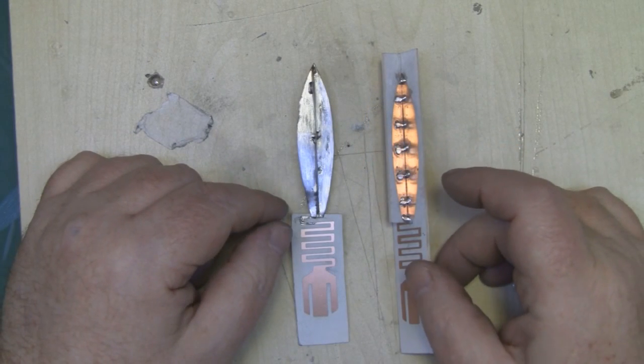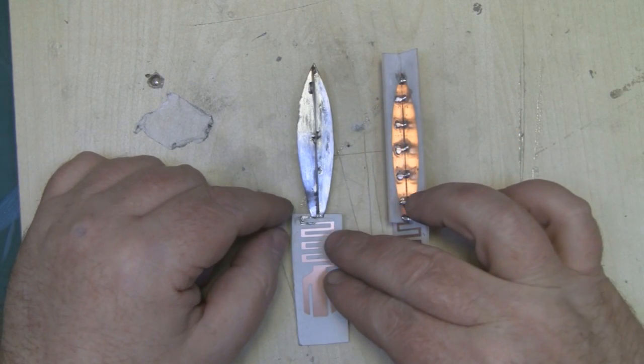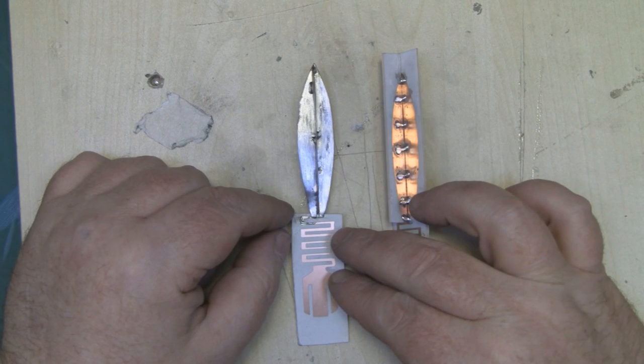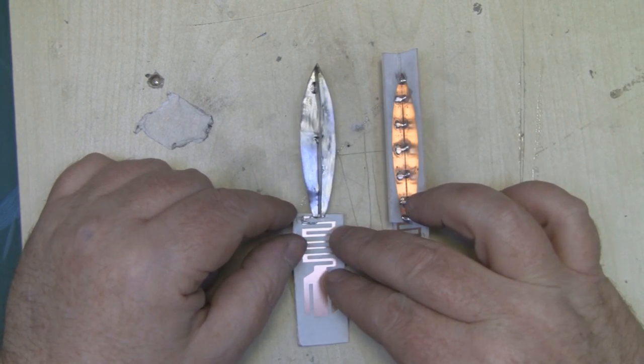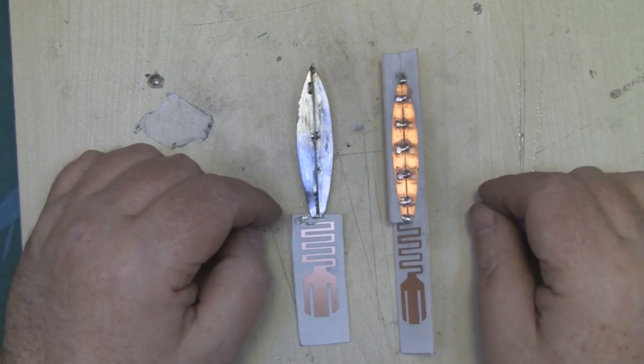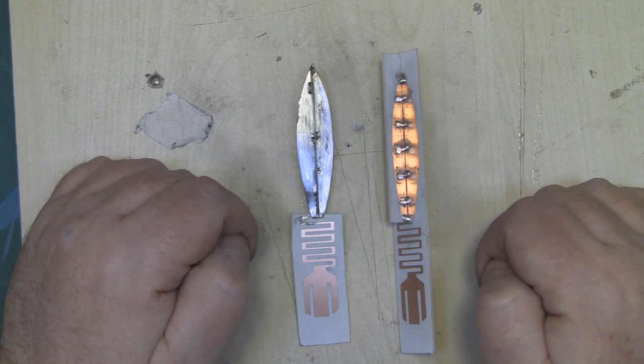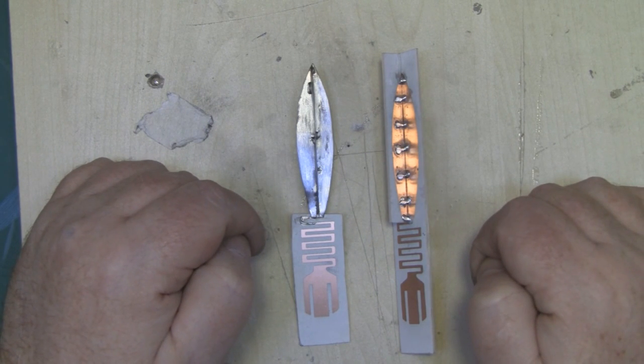So two methods then for the modification. I think this one is probably the neatest out of the two, but they should both work just exactly the same, and at the end of the day when they're in the tube you're not going to see them anyway.